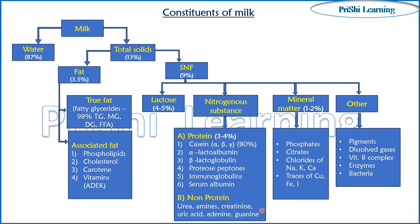Non-protein nitrogen compounds include amines, creatinine, uric acid, adenine, and guanine. Mineral matter is 1 to 2 percent, including phosphates, citrates, chlorides of sodium, potassium, calcium, and trace elements such as copper, iron, and iodine.